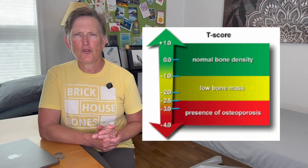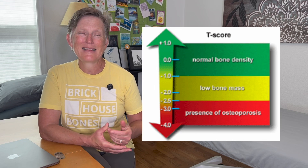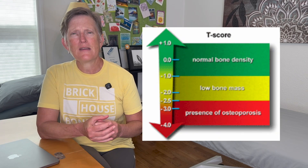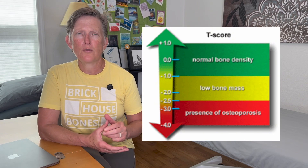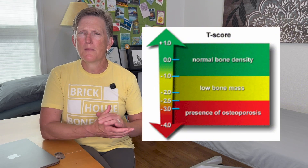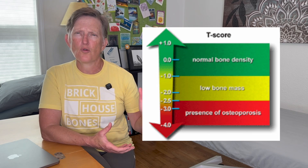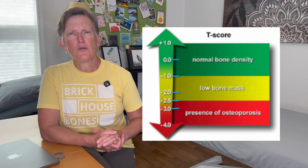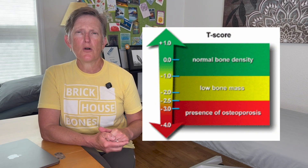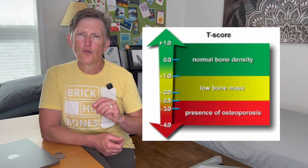They determined that two and a half standard deviations away from normal would be the definition and the diagnosis of osteoporosis. This is based on DEXA scan testing for bone mineral density. Using postmenopausal females as an example, the comparison is to a 30-year-old female with normal bone density. A score 2.5 standard deviations below normal gives a T-score of minus 2.5.